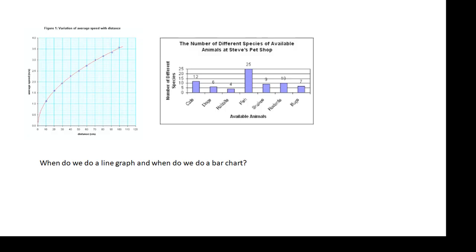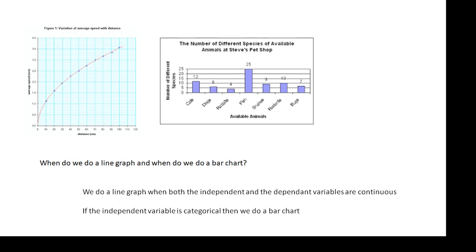When do you do a line graph and when do you do a bar chart? Should be pretty obvious. Basically, if the independent variable is categoric, then you're talking a bar chart. If we're talking continuous variables, then it's a line graph. Common sense, really.